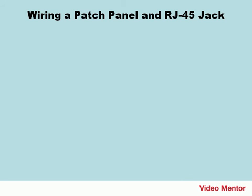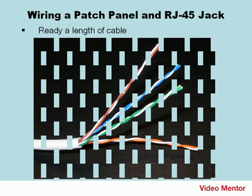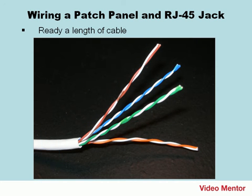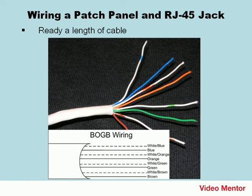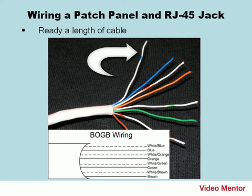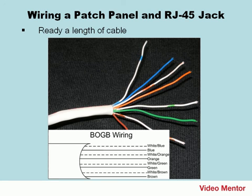First, you want to ready a length of cable and cut a 6-foot length of Category 5E cable. You're going to strip one of the ends with your wire stripper to expose the 8 wires, taking off about 2 inches of the PVC jacket. Now, separate all 8 wires as demonstrated in the previous procedure, but this time organize them in the original BOG-B order: the blue pair first, then the orange pair, then the green pair, and the brown pair. Always use the white with the colored stripes first, and then the solid color for each pair.